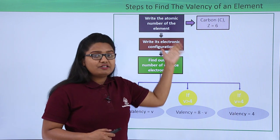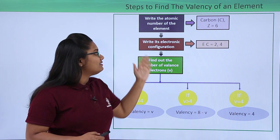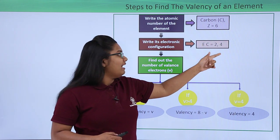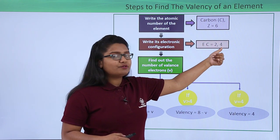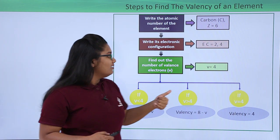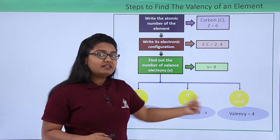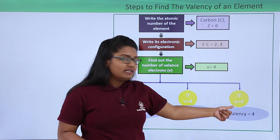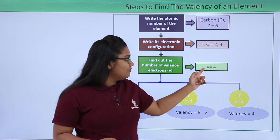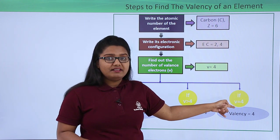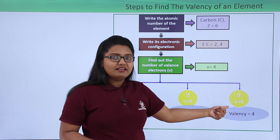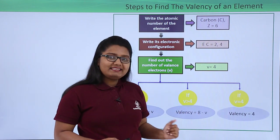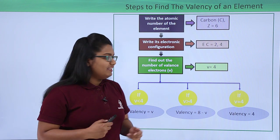For carbon, whose atomic number is 6, the electronic configuration is 2, 4. The valence electrons are 4 in number. We check the conditions — finally we see that V equals 4 satisfies the third condition. So the valency of carbon is exactly 4.